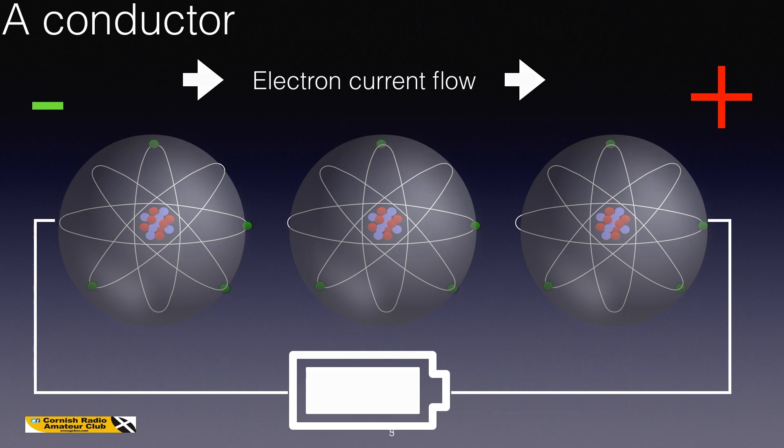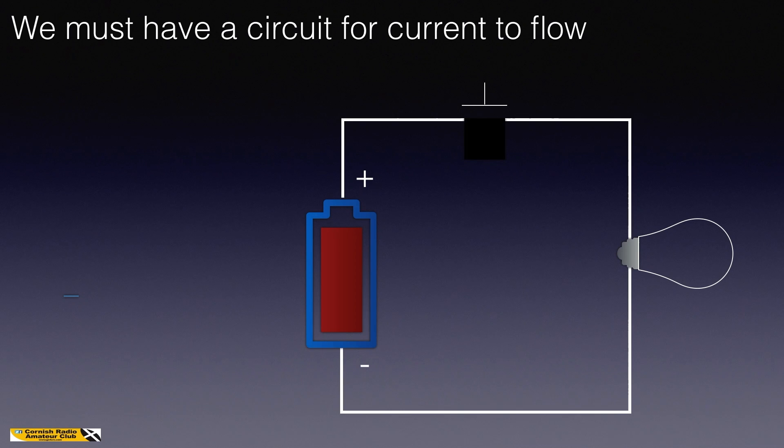We must have a simple circuit for current to flow. Here we have a battery and a bulb. If we close the circuit, then the electrons flow from the negative to the positive. When the circuit is complete, the bulb lights up, but when the circuit is interrupted, the bulb goes out.